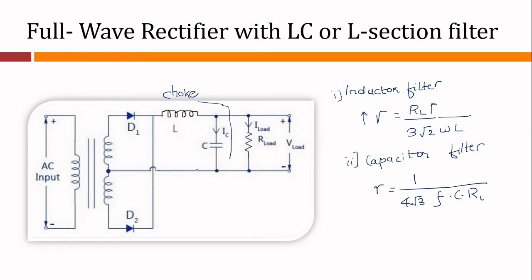The choke L on the input side readily allows DC to pass but opposes the flow of AC component, because its DC resistance is negligibly small but its AC impedance is large. Any fluctuation remaining in the current after passing through the choke is largely bypassed around the load by the shunt capacitor, because the reactance Xc is very much smaller compared to RL at the ripple frequency. However, a small ripple still remains in the filtered output and this is considered negligible if it is less than 1%.